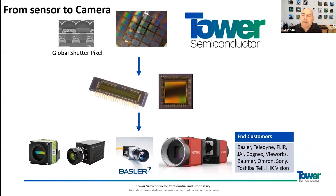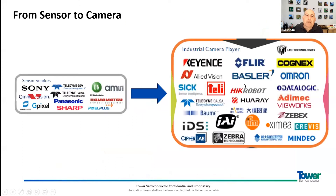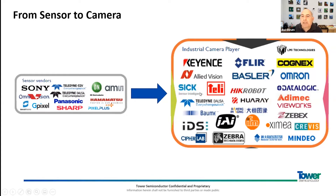This goes into our direct customers, the sensor designers and sensor makers, who sell their products to the camera makers — mainly industrial camera makers like Buzzler, Teledyne, Cognex, JAI, Omron, and Toshiba Tele. For the high-end sensor providers like Teledyne E2V, Teledyne Dalsa, and GPixel, those are making their products with us. Sony is a completely different story as an IDM — they make their own sensors and cameras. Also AMS makes sensors with us.